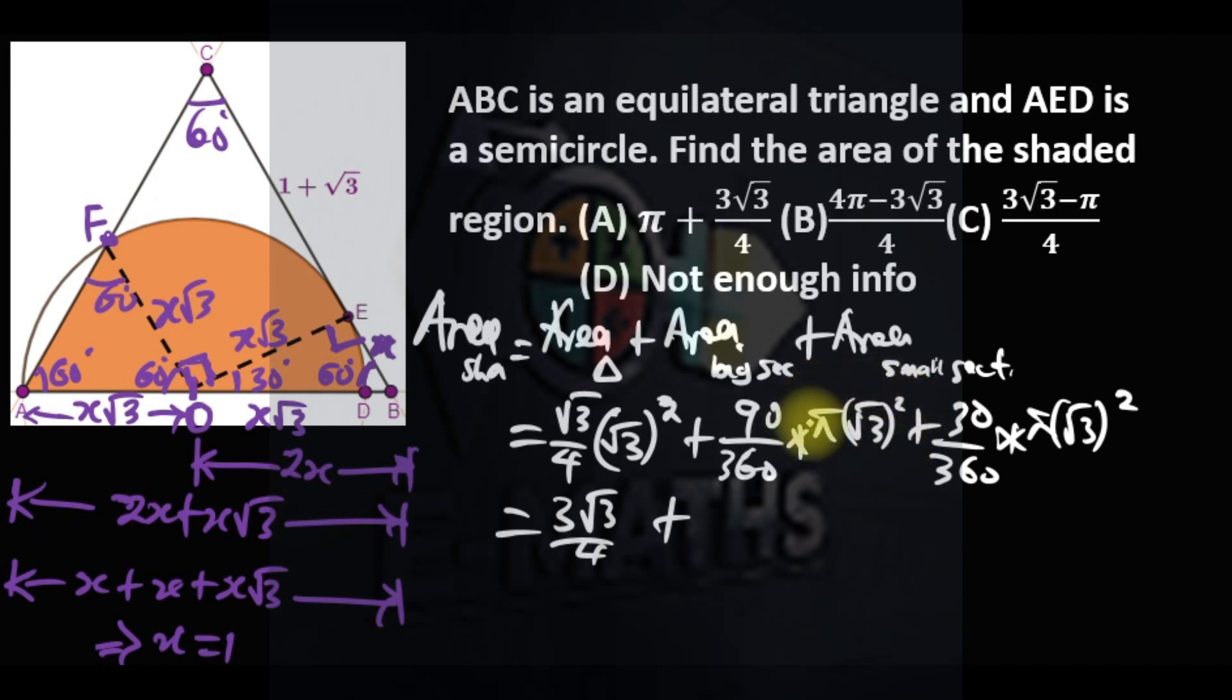So we now have 3 root 3 over 4 plus—as you can see, both have pi root 3 squared over 360. So 90 plus 30 is 120. 120 over 360 is 1/3. So 120 will cancel to give us 1/3, and that's the answer.